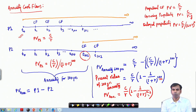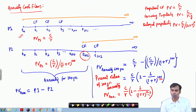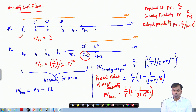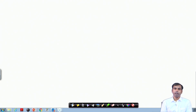You have to be careful while calculating the present value of future cash flows because it becomes very critical to understand at what year the first cash flow is being generated — this essentially determines the number of years for which the cash flow has been delayed. This is how annuity cash flows can be calculated in terms of present value.